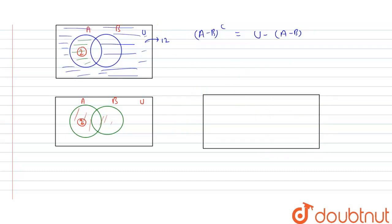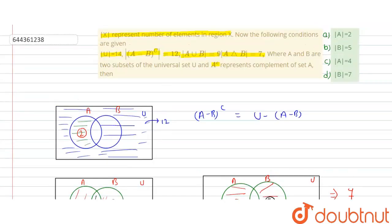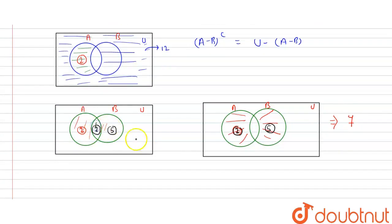We draw two more diagrams for A and B within the universal set. The symmetric difference A△B equals (A minus B) union (B minus A). The A minus B region is 2, and the total symmetric difference is given as 7, so B minus A equals 5. Since A union B equals 9, the intersection part is also 2. Therefore, mod A equals 2 plus 2, which is 4, and mod B equals 5 plus 2, which is 7.